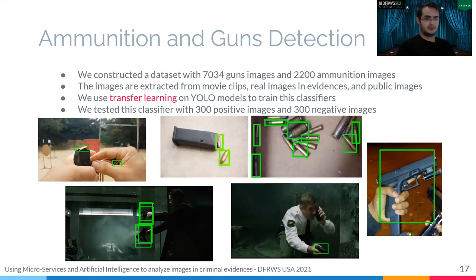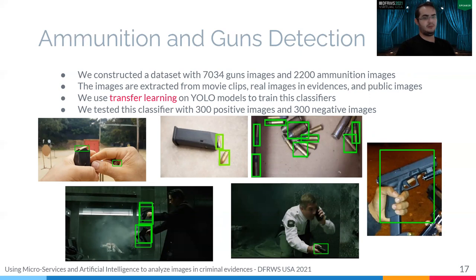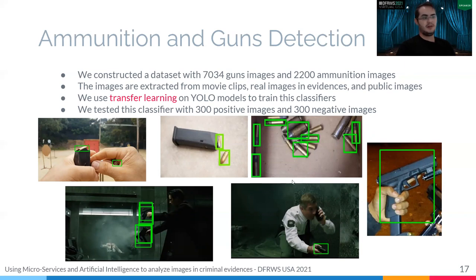We present some developed solutions. The first solution is ammunition and gun detection. We developed our own dataset with 7,034 gun images and 2,200 ammunition images for creating this algorithm. These images are extracted from movie clips, real forensic evidence, and public images. To make the classifier, we used transfer learning and YOLO. We tested this classifier with a dataset of 600 images — 300 positives and 300 negatives — and this image shows some examples classified by this classifier.